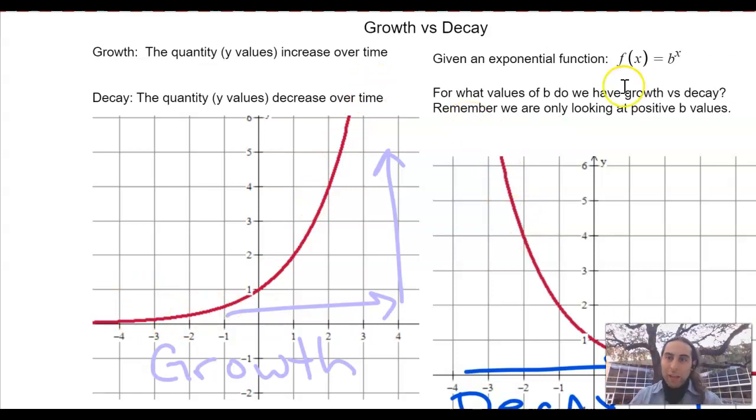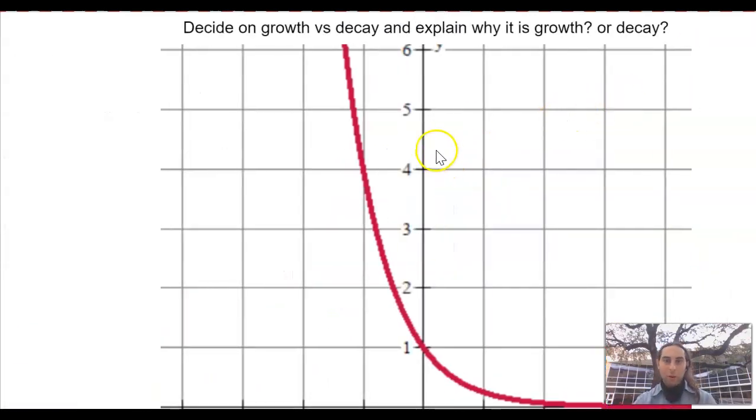For what values of b do we have growth versus decay? So remember, we are only looking at positive b values. So we're not talking about negative b's yet. What values of b are going to grow or decay? So let's decide on growth versus decay and explain why it is growth or decay.